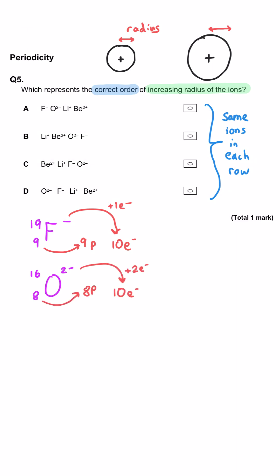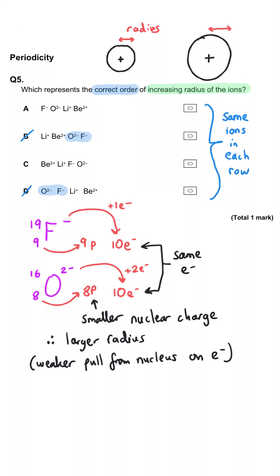Therefore, the oxide ion will be bigger than the fluoride ion because it has a smaller nuclear charge pulling those electrons in. So B and D must be wrong because they have oxide as being smaller than fluoride, when it would be bigger than fluoride.